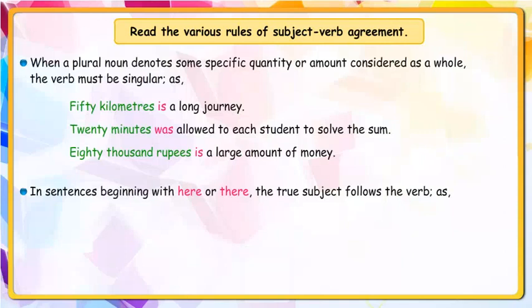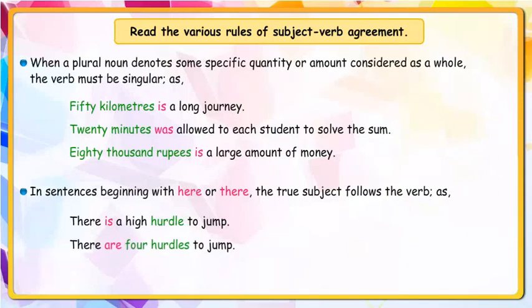In sentences beginning with 'here' or 'there', the true subject follows the verb. For example: 'There is a high hurdle to jump.' 'There are four hurdles to jump.' 'Here are the papers you requested.'